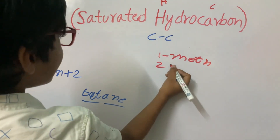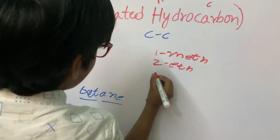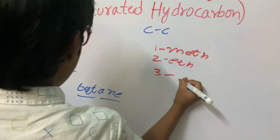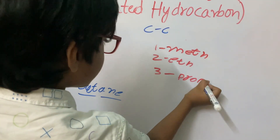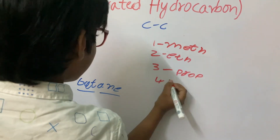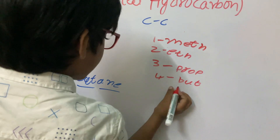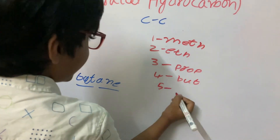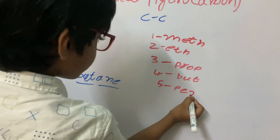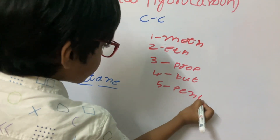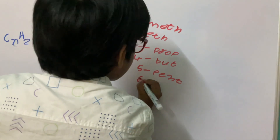For 1, it's Meth. For 2, it's Eth. For 3, it's Prop. For 4, it's But. For 5, it's Pent. For 6, it's Hex.